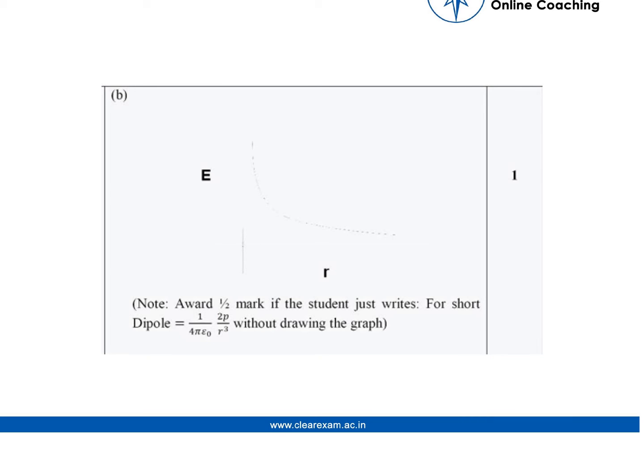In part B we are supposed to draw a graph of E versus R. The graph is not visible here. It's a graph like this.